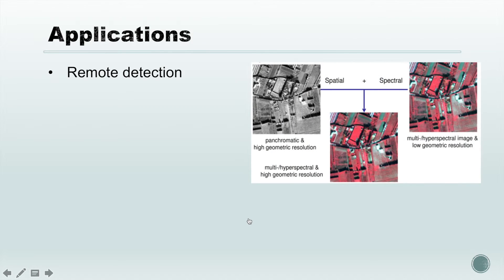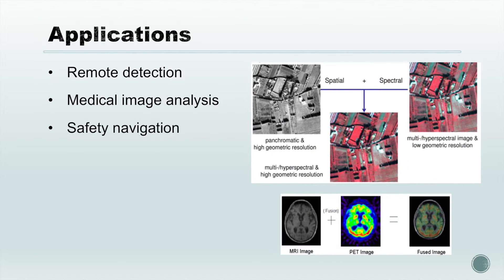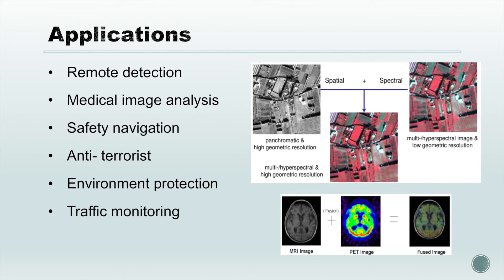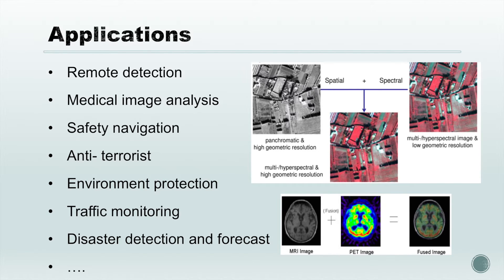The last part shows some applications of image fusion, for example: remote detection, medical image analysis, safety navigation, anti-terrorism, environment protection, traffic monitoring, disaster detection and forecasting, and so on. This technology has been applied across various fields and has broad development potential nowadays.